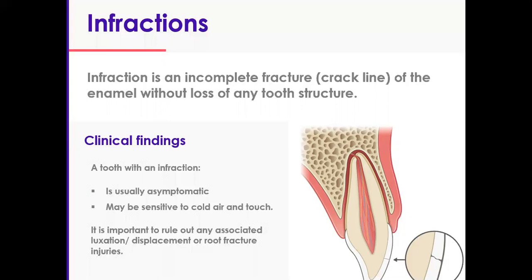On top of all of this, if you are doing endodontic treatment on any teeth the patient can see, make sure that before you put your rubber dam on, you investigate these teeth and record any signs of infractions. After you take the rubber dam off the tooth will be dry, and the patient may notice these crack lines. If you haven't warned them, they may think it was caused by your access cavity or rubber dam clamp. So always record these before you access any teeth.